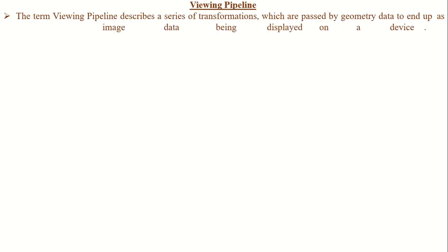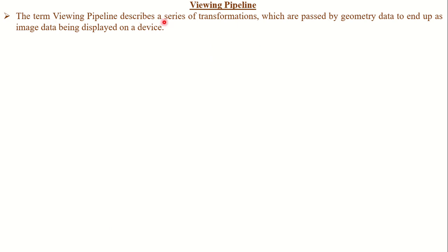So first of all, what is viewing pipelining? The term viewing pipelining describes a series of transformations which are passed by geometry data to end up as image data being displayed on a device. I hope you understand this theoretical notation, so I will explain it with the help of an example.